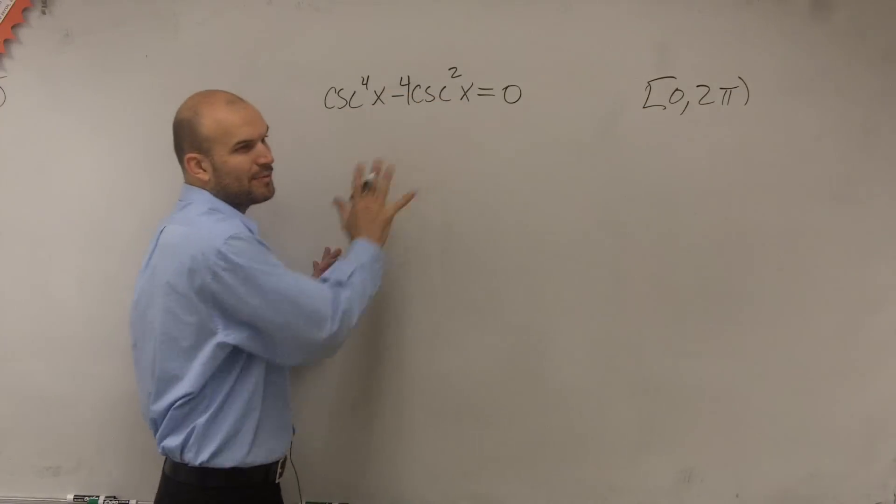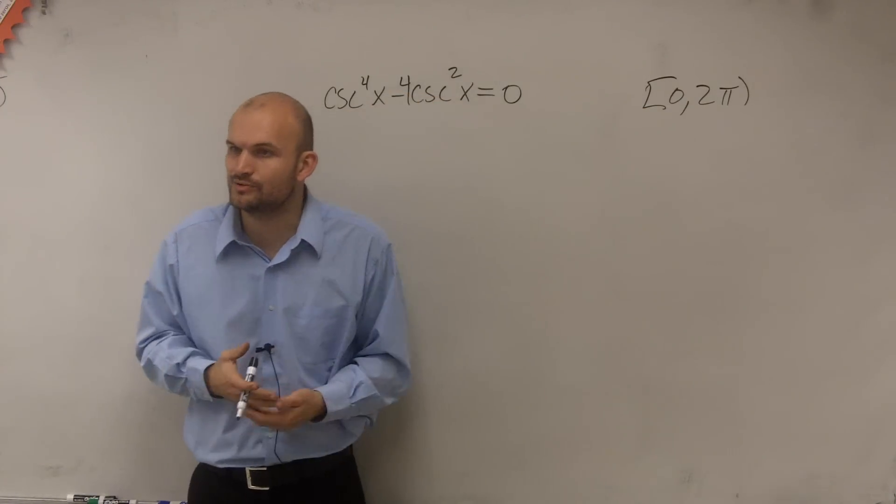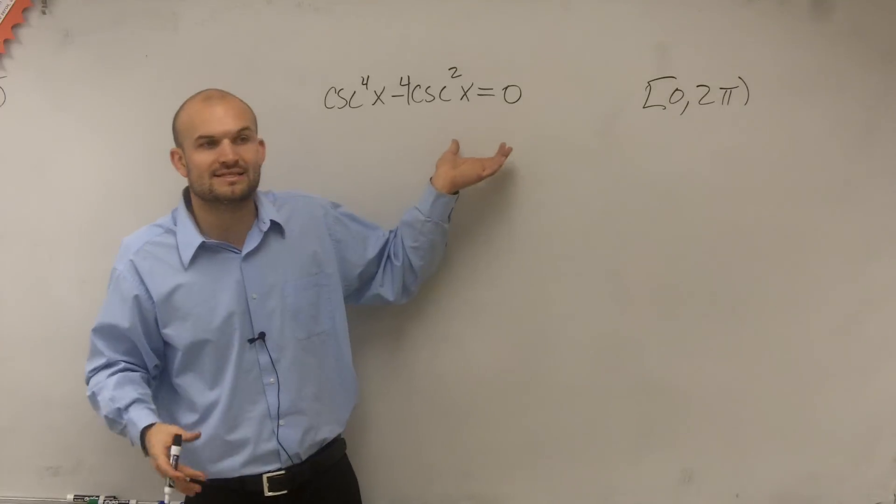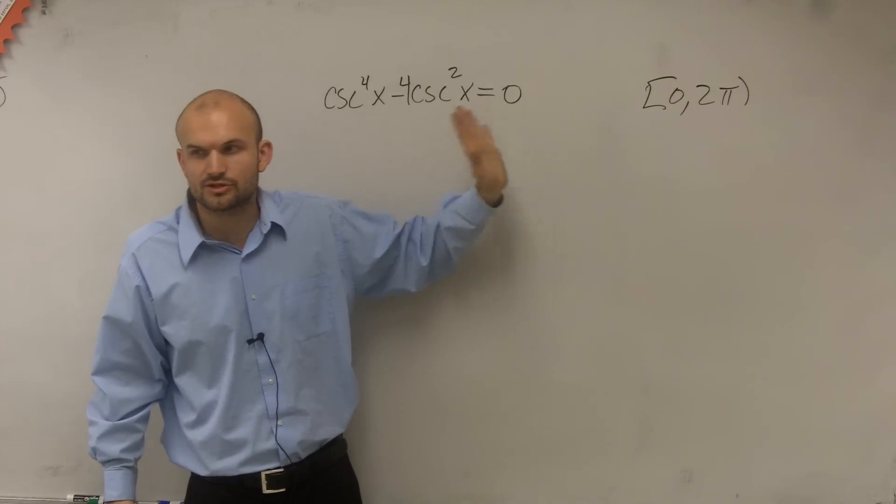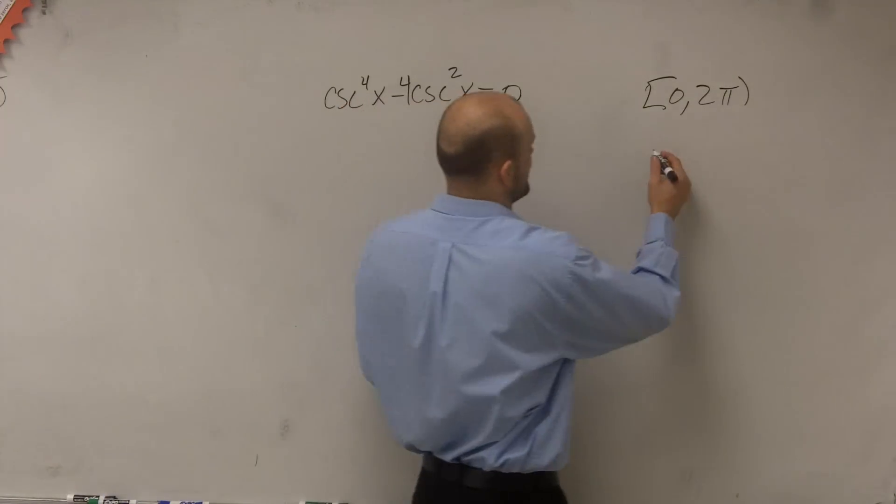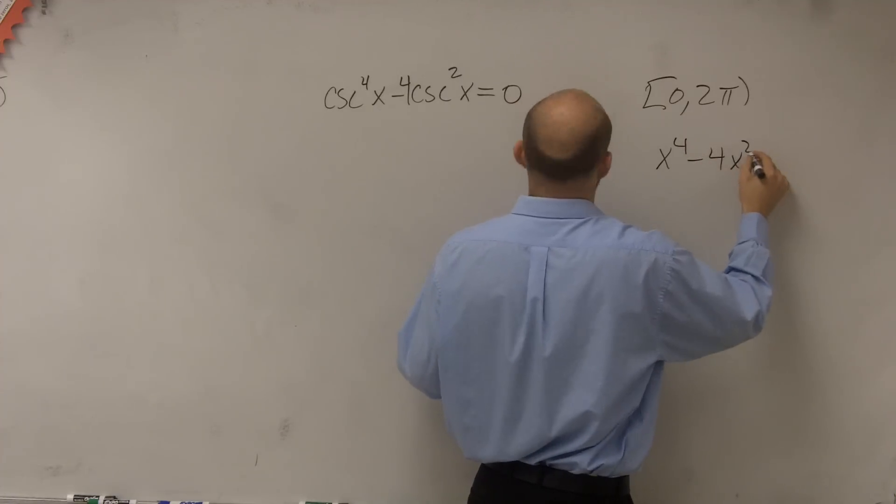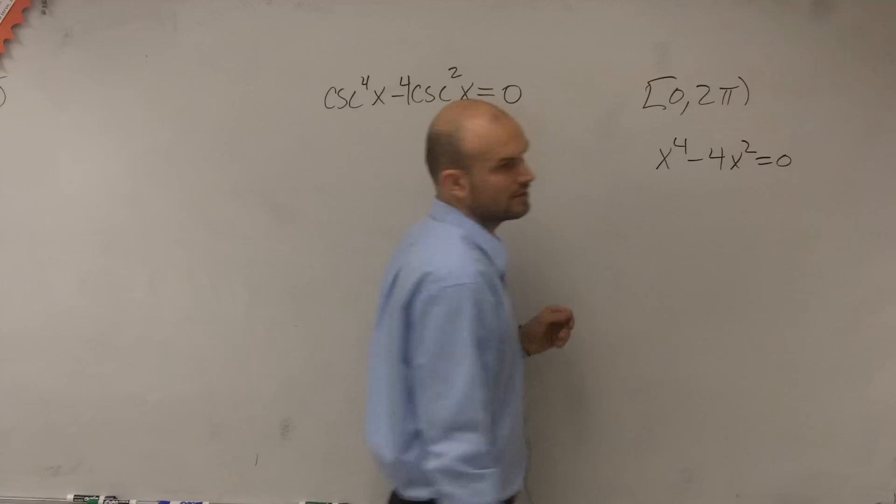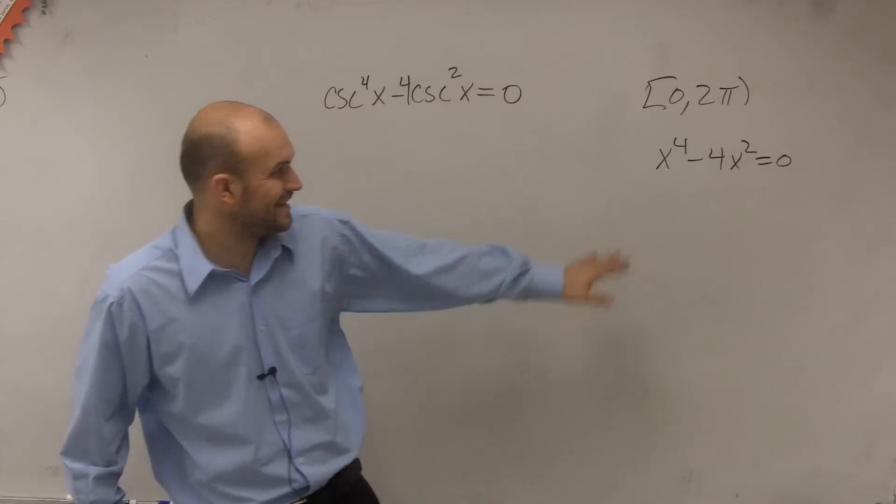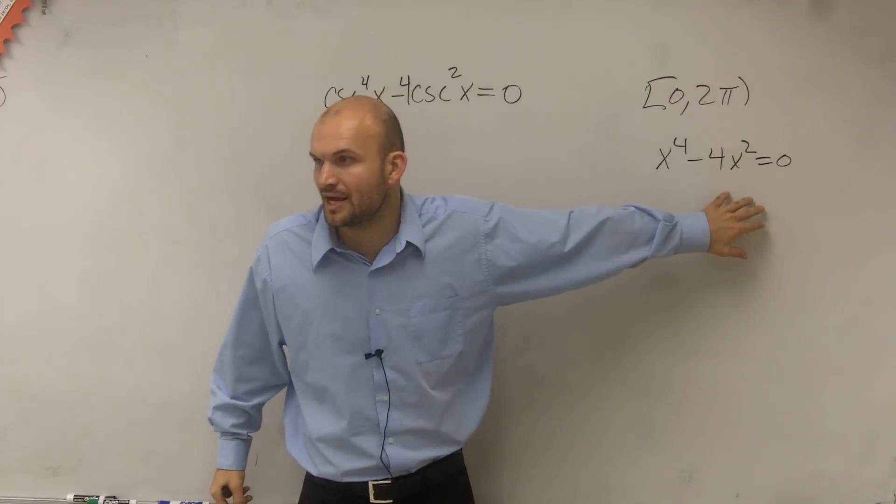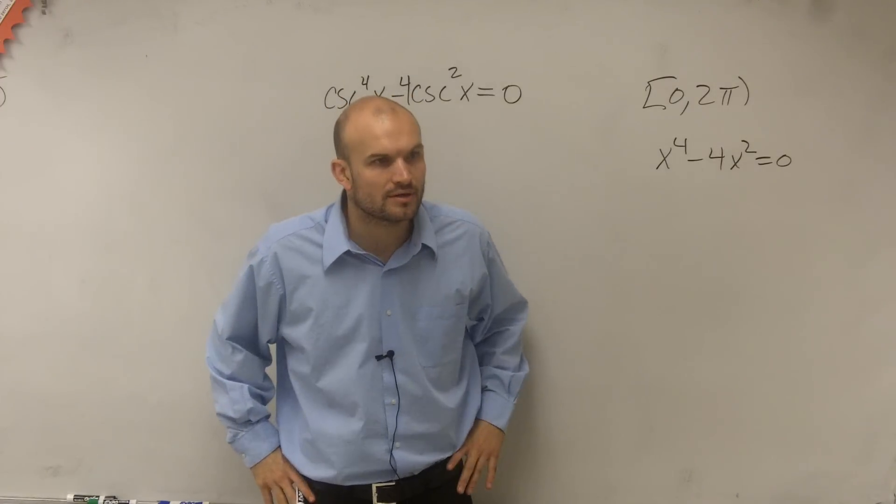Well, again, when you have a problem that you don't really know what to do yet, it's very helpful, I think, a lot of times just to write it without the trig functions. So let's just write that as x to the 4 minus 4x squared equals 0. So if I asked you guys to solve this in your algebra 2 class, what would you have to do? Does that remember?